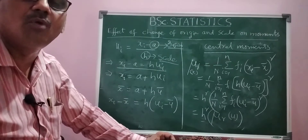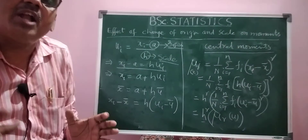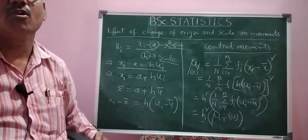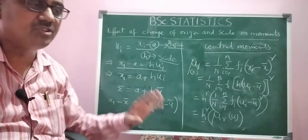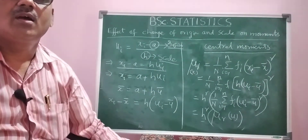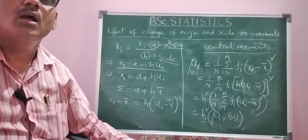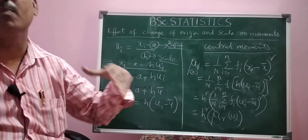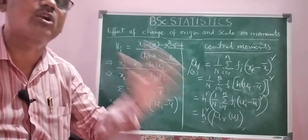To conclude: both central and non-central moments are independent of shifting the origin, but they are dependent on shifting the scale. The moments are not affected by a change of origin, but they are affected by a change of scale. Thank you.